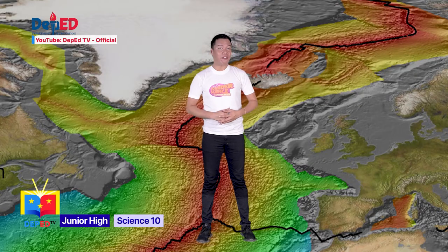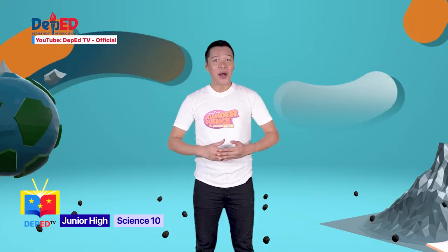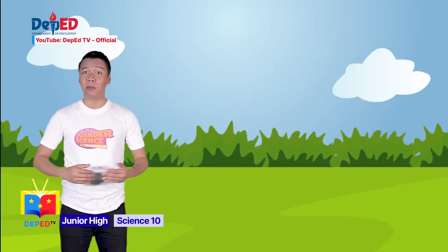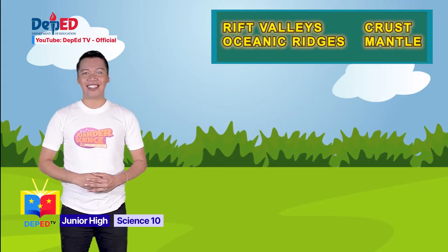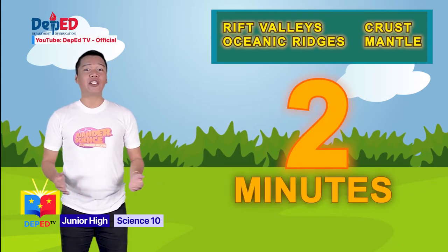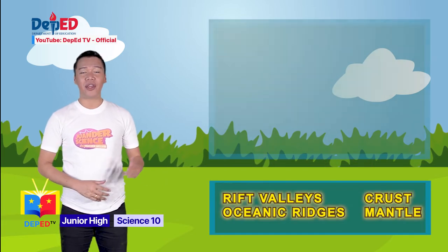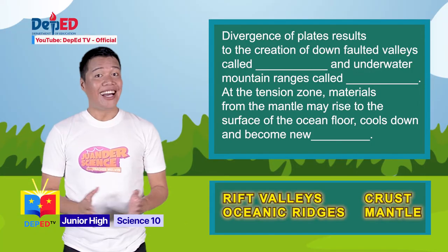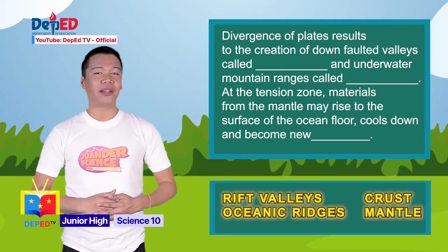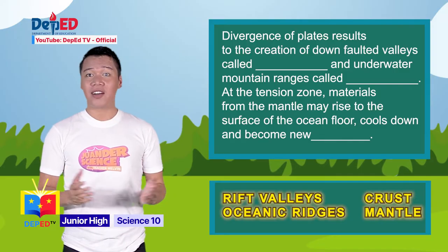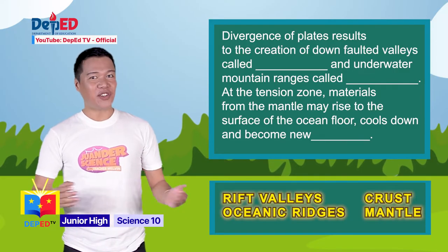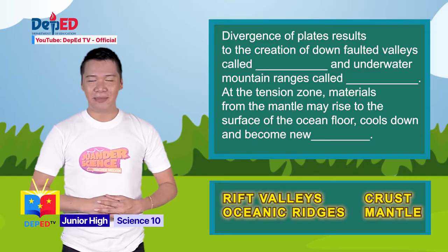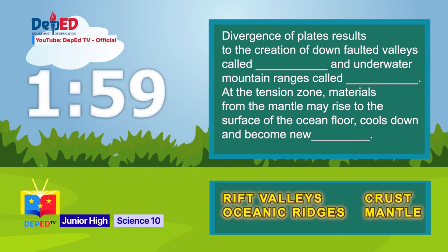You have just learned about the processes and landforms along divergent boundaries. Now, using your pencil and paper, try to answer this activity. I have four words in a box: rift valley, oceanic ridges, crust, and mantle. For two minutes, use these words to fill in and complete this paragraph. Divergence of plates results in the creation of down-faulted valleys called blank, and underwater mountain ranges called blank. At the tension zone, materials from the mantle may rise to the surface of the ocean floor, cool down, and become new blank. Time starts now.